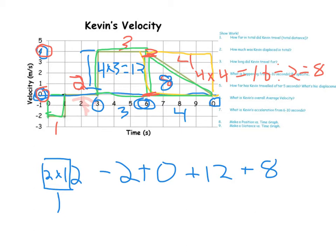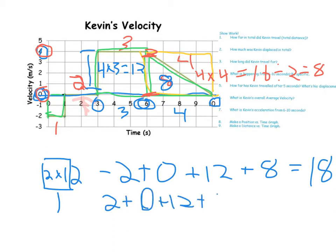So the numbers for displacement: negative two plus zero is negative two, plus twelve is ten, plus eight is eighteen — so Kevin's total displacement was eighteen meters. We need that for average velocity, since average velocity equals displacement over time. For total distance, which helps with average speed, we ignore the negative: two plus zero plus twelve plus eight equals twenty-two meters total distance.